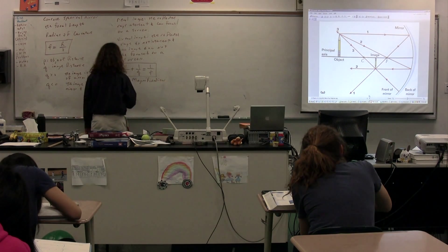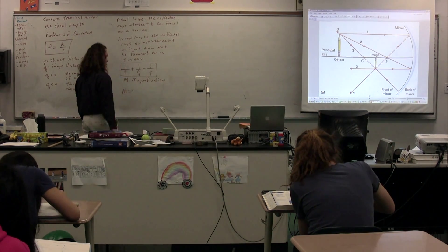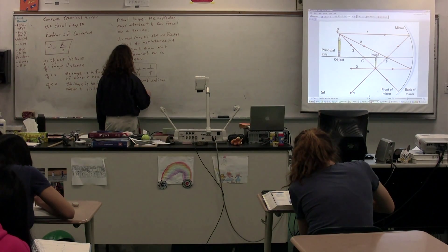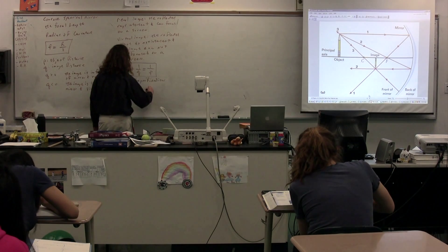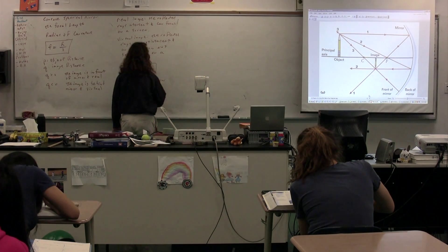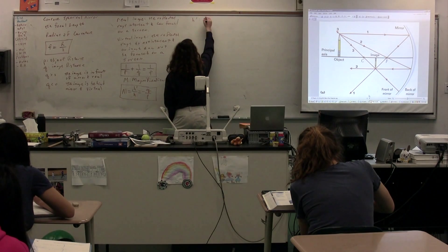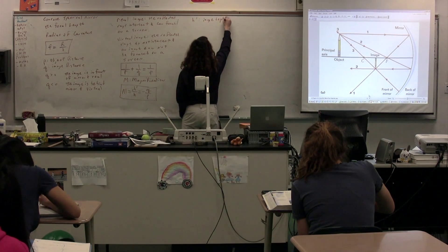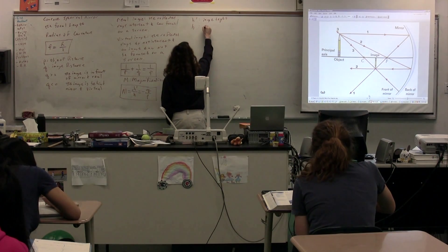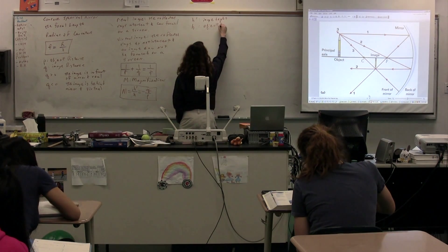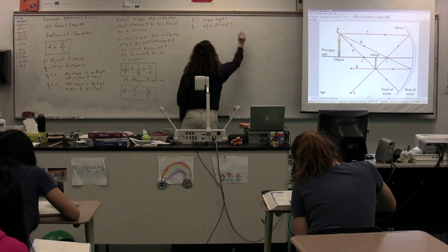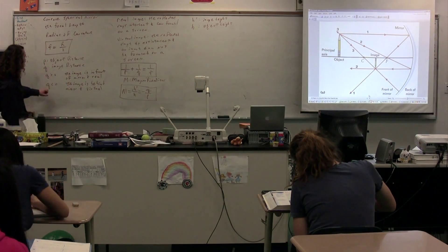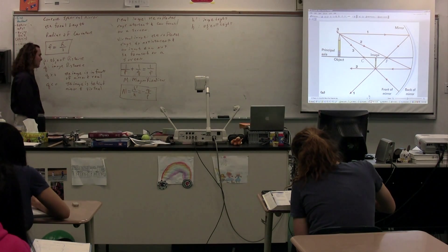The equation for magnification, capital M, is equal to H prime over H, and it's also equal to negative Q over P. H prime is defined as the image height, and H is the object height. So far: if Q is greater than zero, we have a real image; if the image distance is less than zero, we have a virtual image.